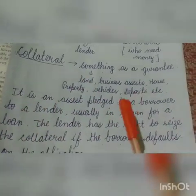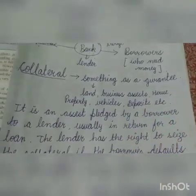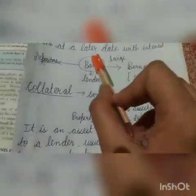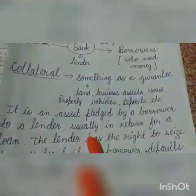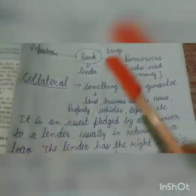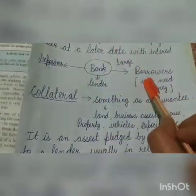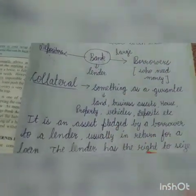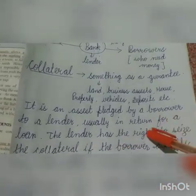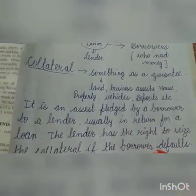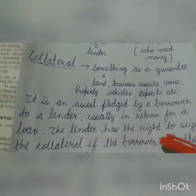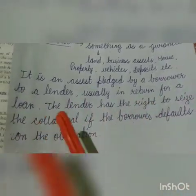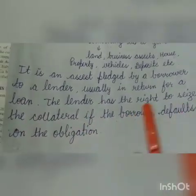Simply, it is an asset pledged by a borrower to a lender, usually in return for a loan. Yeh ek asset hota hai joh borrower joh hai wo pledge kerta hai to a lender — mean bank ko. Aap hume loan do, hum aapke paas koi asset rakhate hai — hum isko agar loan repay nuhi kar pahe to yeh joh asset hai aapke paas right hai ki aap asset ko rakh sakti hai. The lender has the right to seize the collateral if the borrower defaults on the obligation.